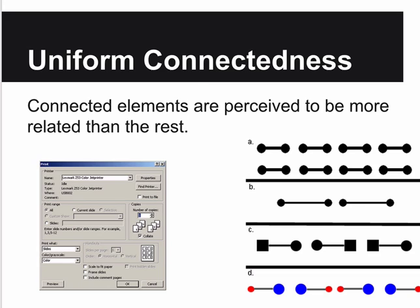Uniform connectedness: connected elements are perceived to be more related than unconnected ones. Two dots connected by a line appear more related than two unconnected dots that are physically closer together - even if the connected pair is farther apart. In a GUI, we use boxes around groups of controls: those boxes help the user know that these things belong together, even though they add some visual clutter. The boxes help the user understand that these items are related to each other.